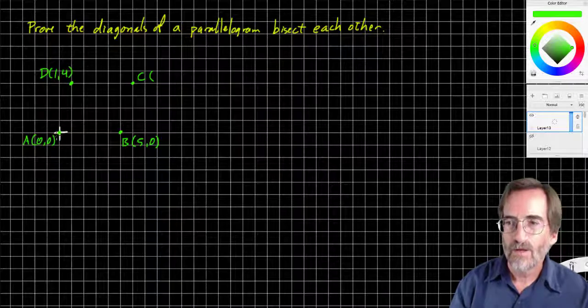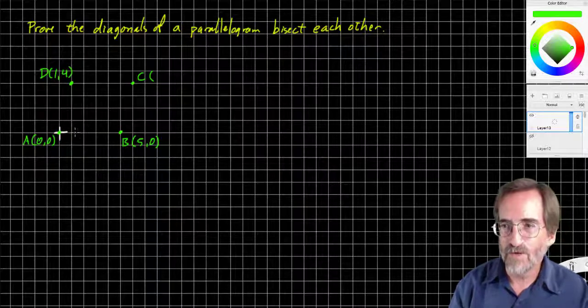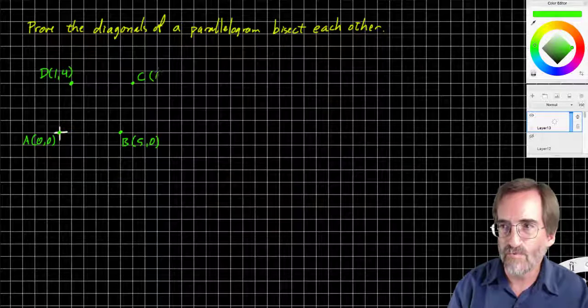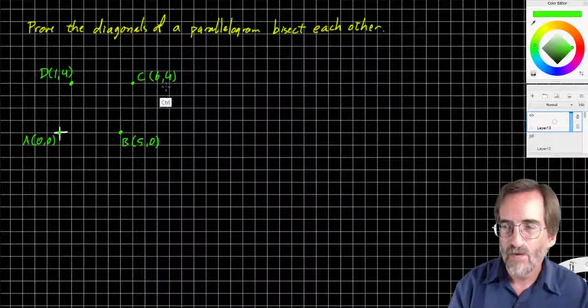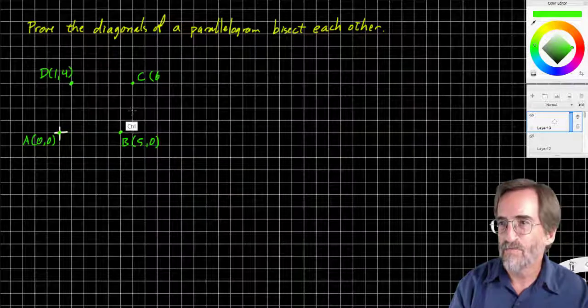One to the right and four up. So this is D, one, four. And now we have the question, where is C? And I can count by drawing one, two, three, four, five, six, and one, two, three, four. I can say six, four. But I wanna point out something here.